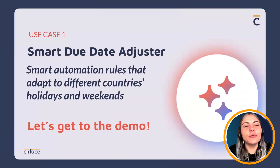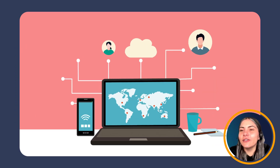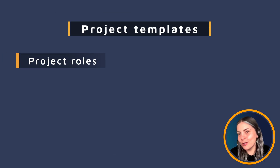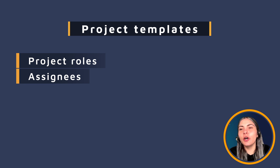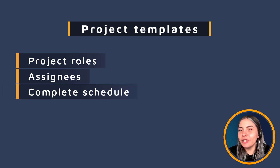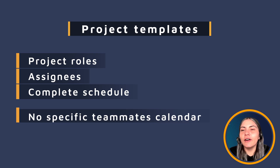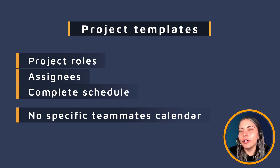For our first use case, we have what we call Smart Due Date Adjuster. We've seen while working with multiple clients that many have global teams distributed across multiple countries. Asana's project templates are great because they allow us to set up project roles and schedule based on start or due date. But until now, we weren't able to have specific teammates' calendars embedded into our project. A project manager would need to manually review and adjust any tasks landing on a holiday or a weekend.